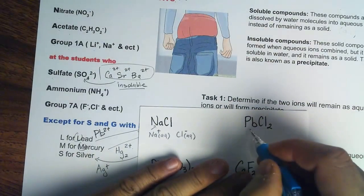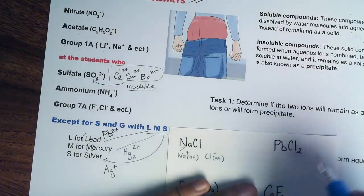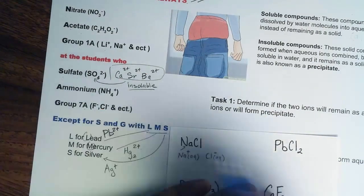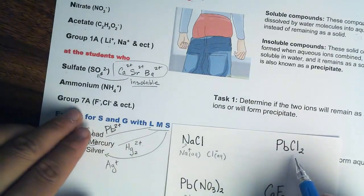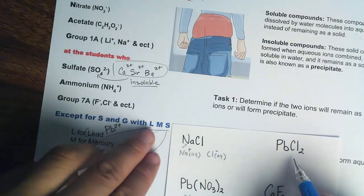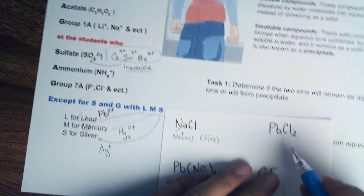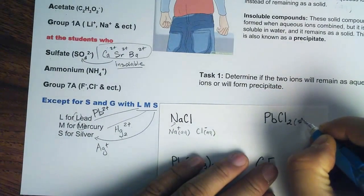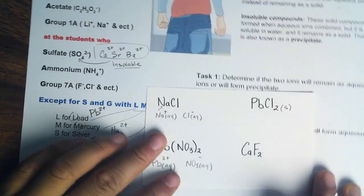Then we have lead chloride. Notice how lead is part of LMS and chlorine is from Group 7A. Chlorine is always soluble, but when bonded with lead it will not be soluble. So in this case it is going to remain as a solid, or as a precipitate.